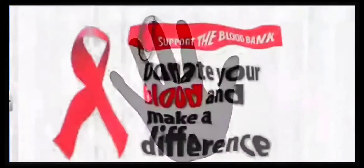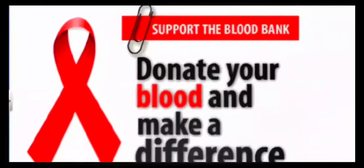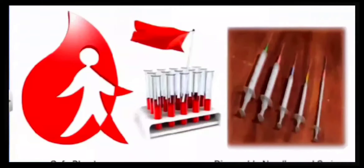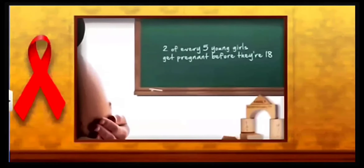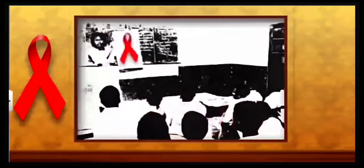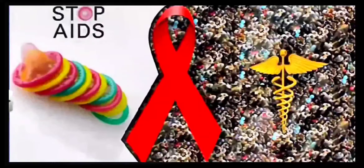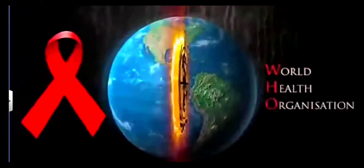People have to be made aware about the various parameters of this disease — basically the knowledge about safe blood, about non-sharing of needles. Drug addiction has to be eradicated. Sex education has to be introduced into schools and society has to be taught about the ways this disease spreads and how to prevent it.